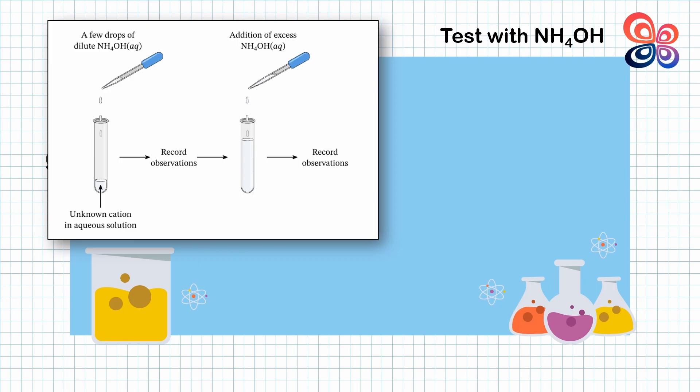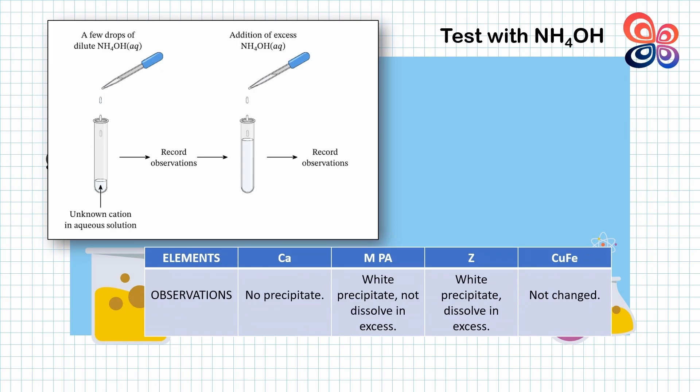There is no precipitate formed in salt containing calcium in excess. The white precipitate is formed in excess if the salt contains magnesium, lead, and aluminium. For salt containing zinc, the white precipitate is dissolved in excess of ammonium hydroxide. And the last one, the salt containing copper and iron is not changed.